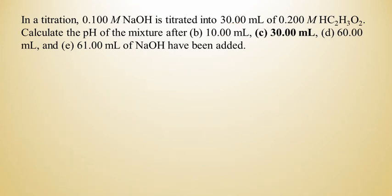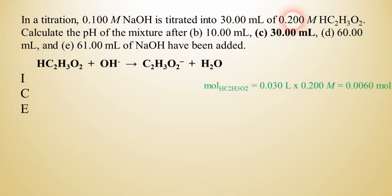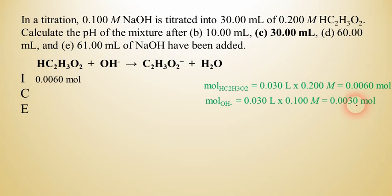Now let's go on to Part C. We have to do the whole process over again. The moles of acetic acid haven't changed — it's still 0.2 molar × 0.03 liters = 0.006 moles. But the hydroxide moles will be different now: 0.1 molar × 30 milliliters (0.03 liters) = 0.003 moles of hydroxide.